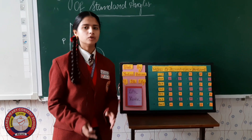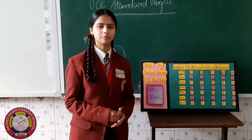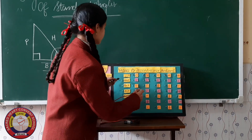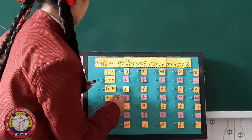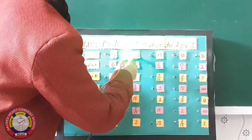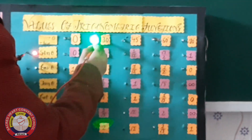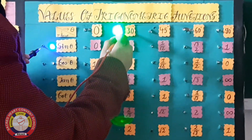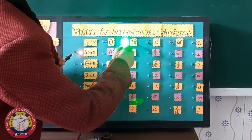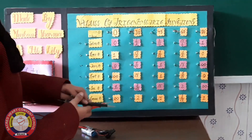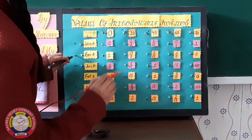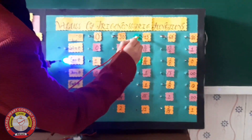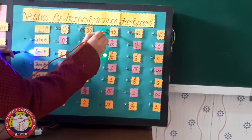Now let us move on to our playful model, with the help of which we can find the angles and their values. Suppose I want to find the value of sin 30. I will place this black pointer on the value of sin and this red pointer on the value of 30. The bulb that glows will tell me the right value — that is, sin 30 is 1/2. Now if I want to find the value of cos 45, the bulb glowing here tells me that cos 45 is 1/√2.